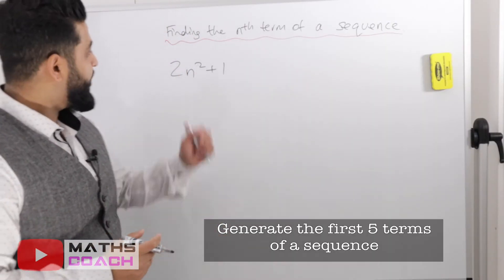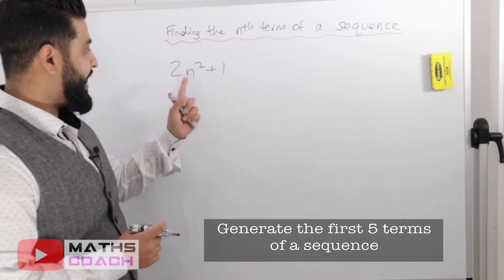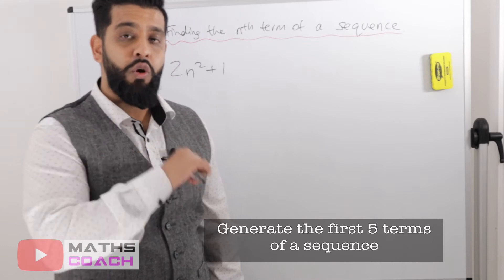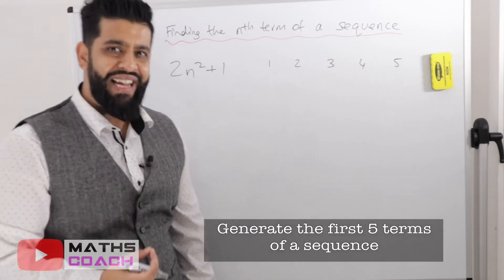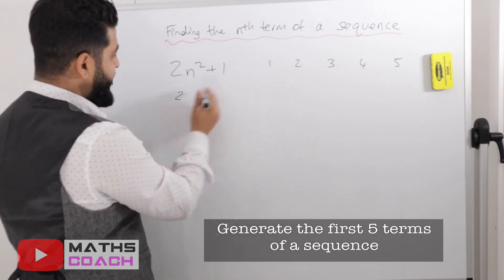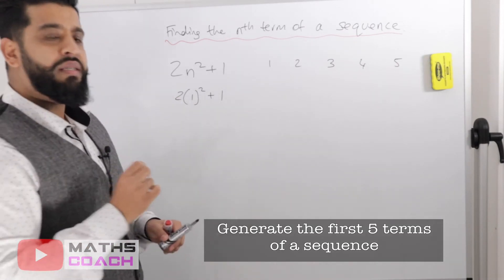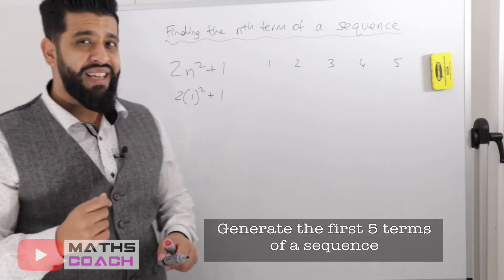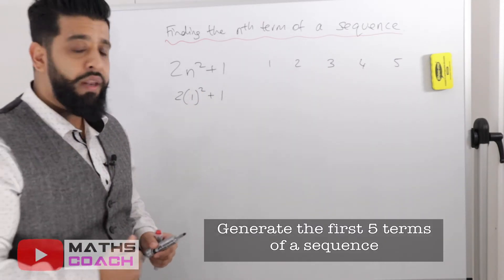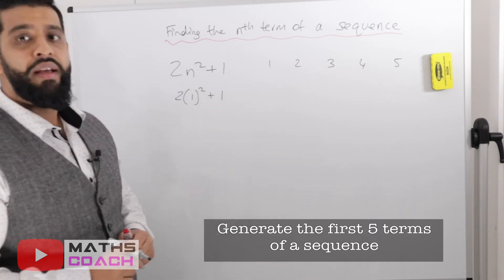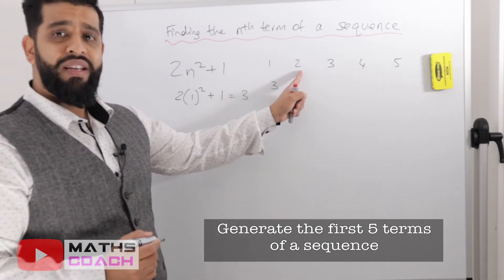For the next question we have a quadratic sequence — quadratic because there is a power on the n. The rule is 2n² plus 1, and we again generate the first five terms with n = 1, 2, 3, 4, 5. For n equals 1: following BIDMAS, we do 1 squared first, which is 1, then 1 times 2 is 2, plus 1 is 3. So the first term is 3.